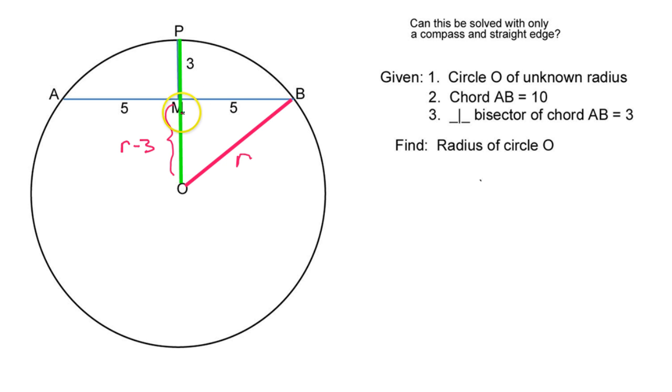So that leaves us with a right triangle with legs 5, R minus 3, and hypotenuse R. So you can probably guess that I'm about to do the Pythagorean theorem.